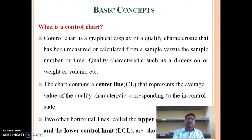A control chart is a graphical display of quality characteristics that has been measured or calculated from a sample versus the sample number or time. Quality characteristics such as dimension, weight, or volume. The chart contains a central line (CL) that represents the average value of the quality characteristics corresponding to the in-control state.